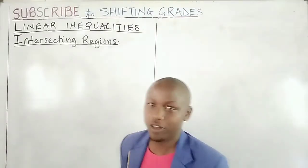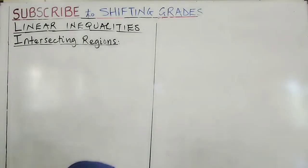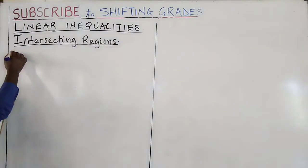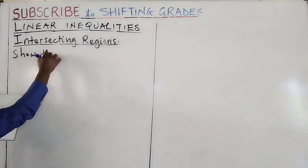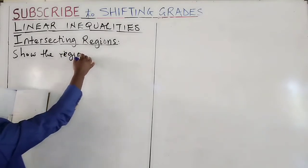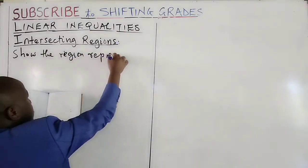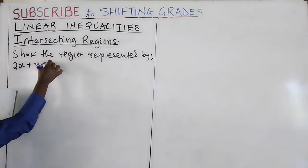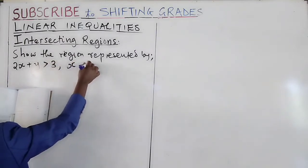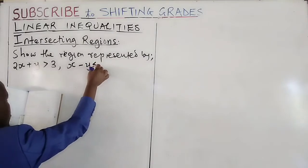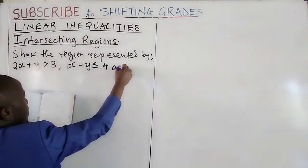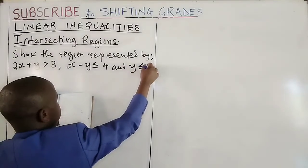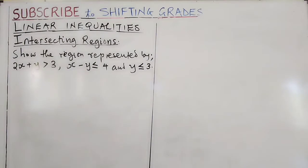Because we've known how to plot the inequalities, we'll go straight to an example. Example: show the region represented by the inequalities 2x plus y greater than 3, x minus y less than or equal to 4, and y less than or equal to 3. We need to show the region represented by these three inequalities.